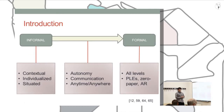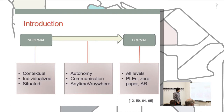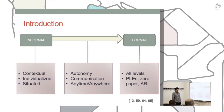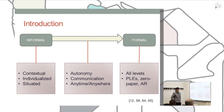Mobile learning is a methodology that explores the uses of mobile devices in the educational context. It has been traditionally situated inside the informal context of education, mainly due to its character of contextual, individualized, and situated learning. But the autonomy it brings to the student, joined with the advancement of technologies, is leading to education anytime and anywhere, which is blurring the line between informal and formal education.